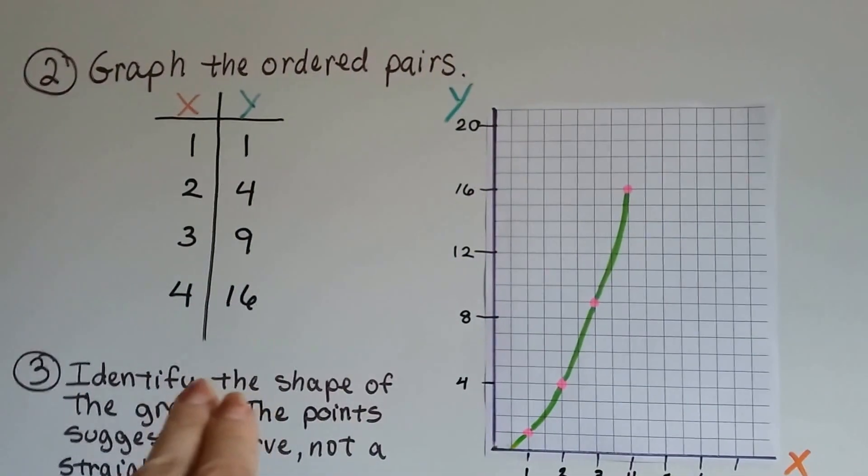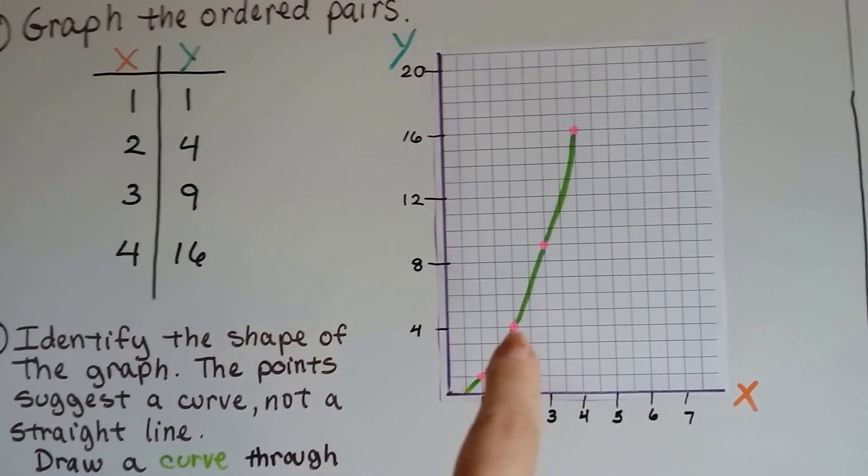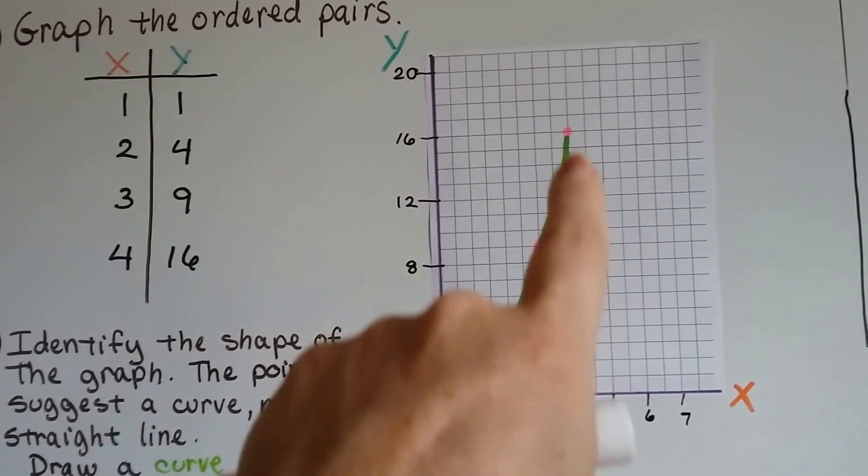So, here's the ordered pairs in a vertical table. I'm going to graph the ordered pairs of one, one, two, four, three, nine, and four, sixteen.